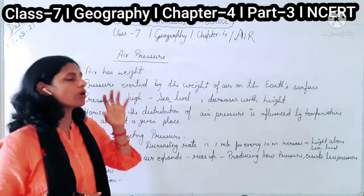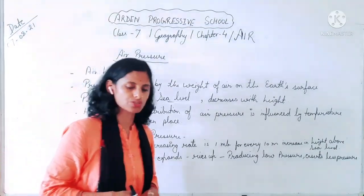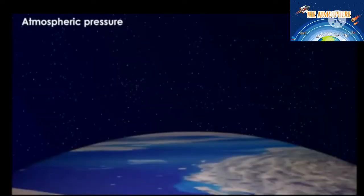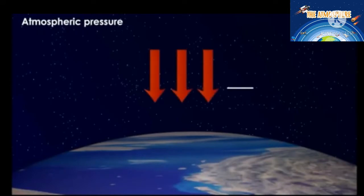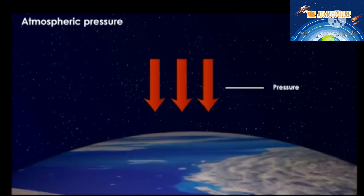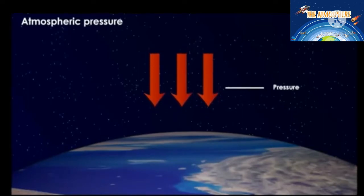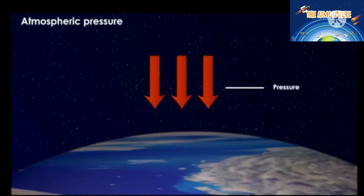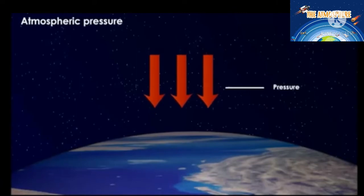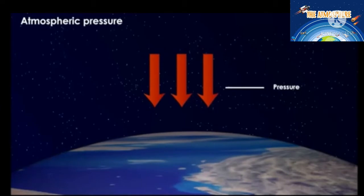Atmospheric pressure is defined as the pressure exerted by the weight of the air on the Earth's surface. It can be measured by an instrument called the barometer. The normal atmospheric pressure at sea level is about 76 centimeters of mercury column in the barometer.